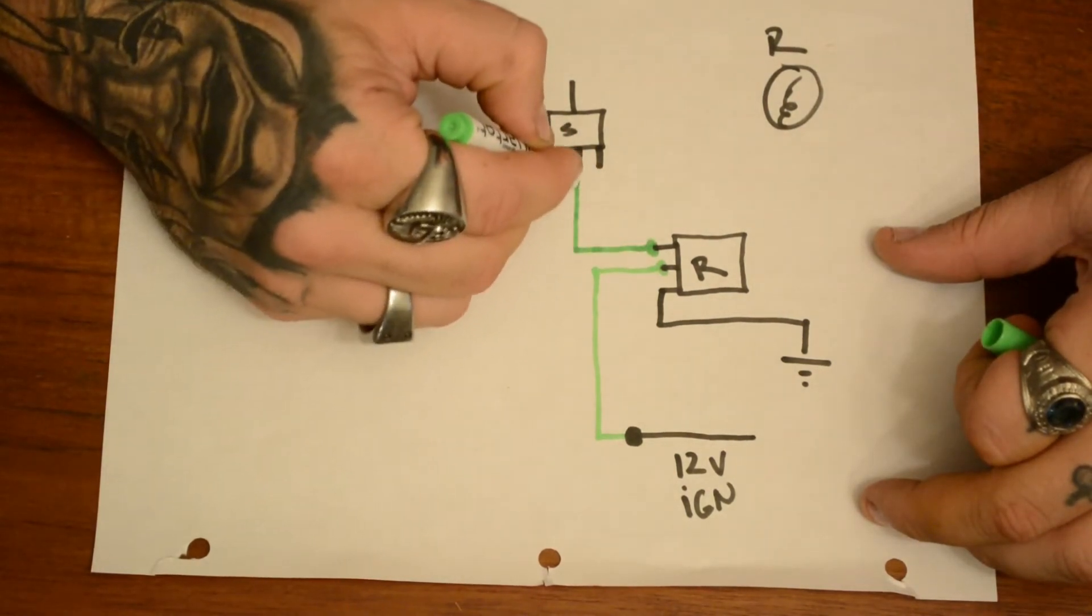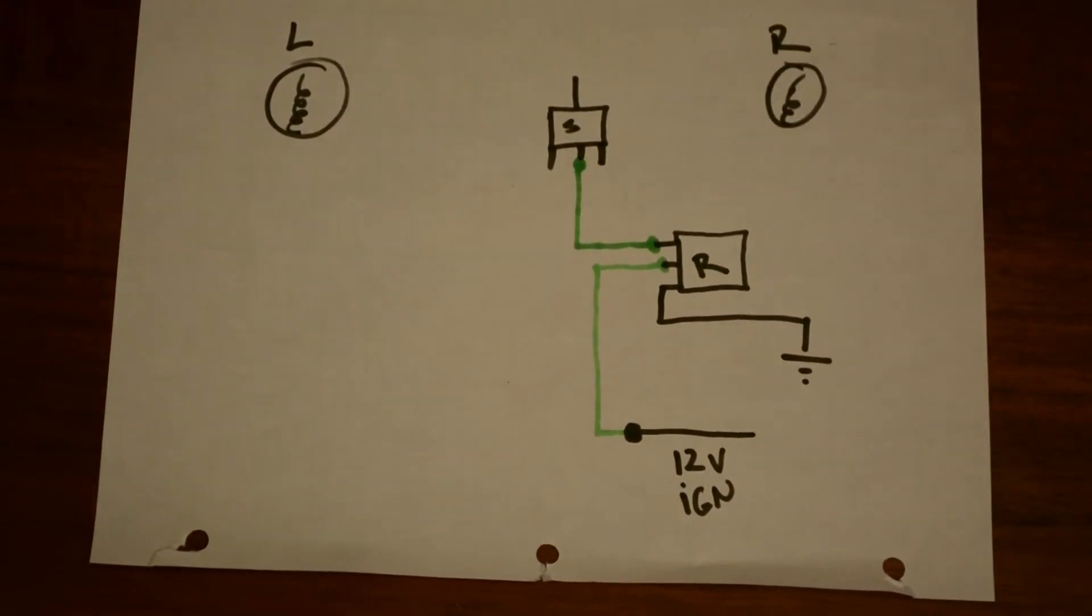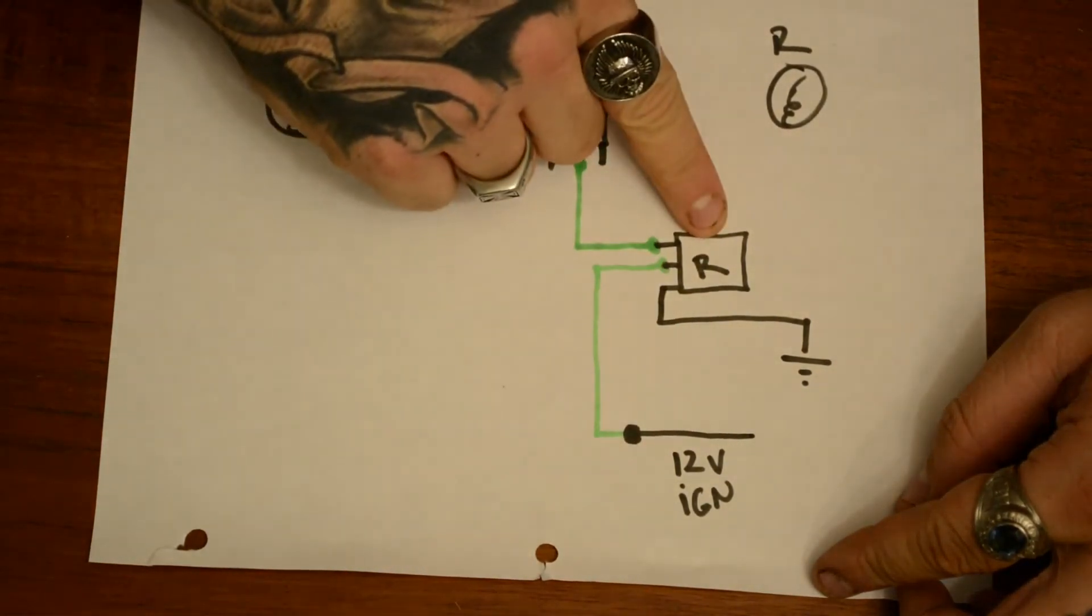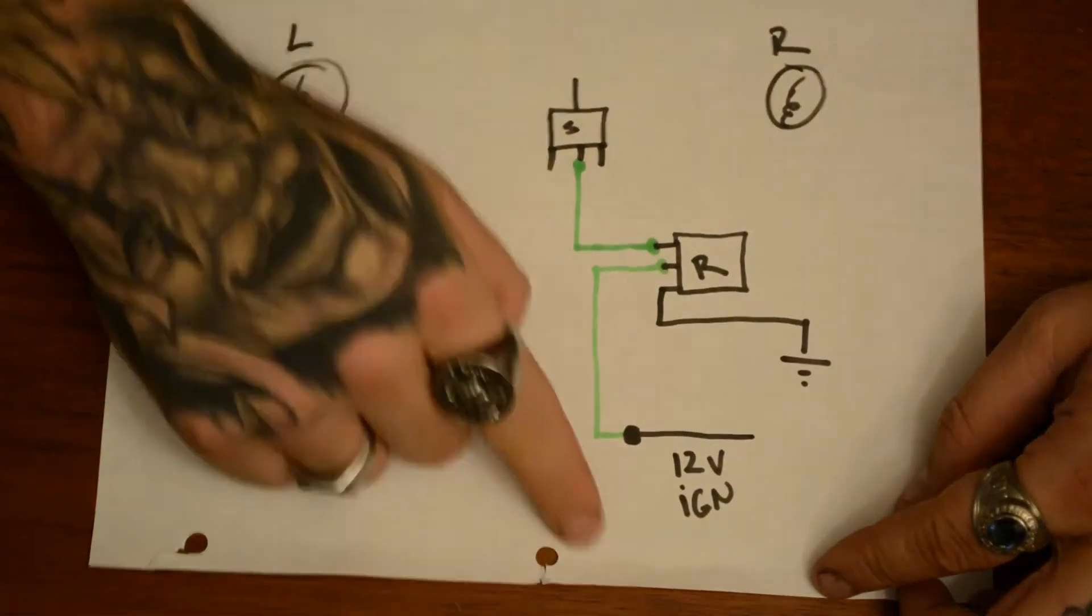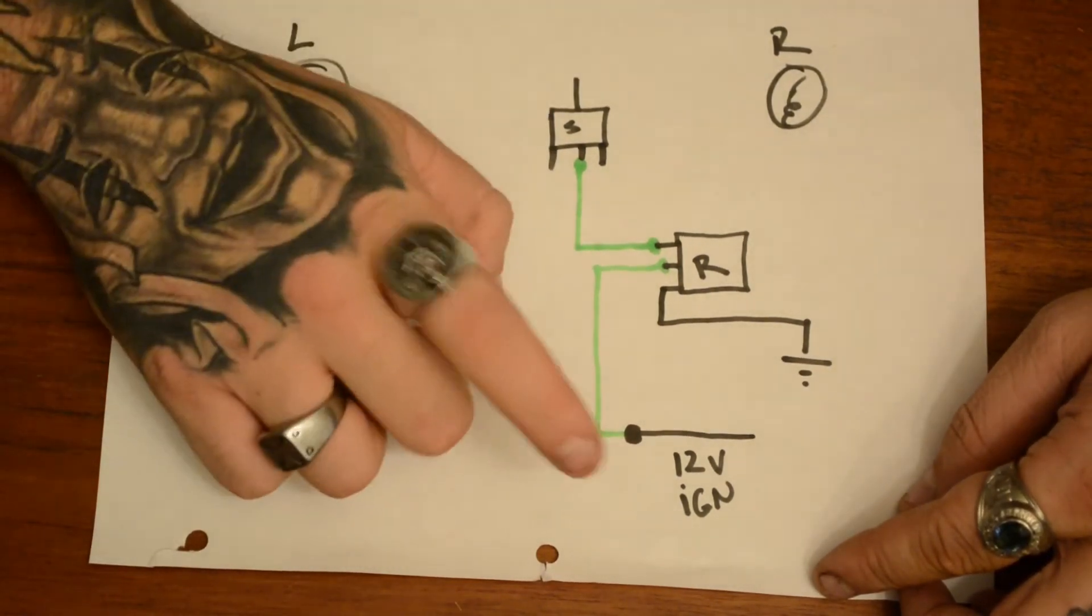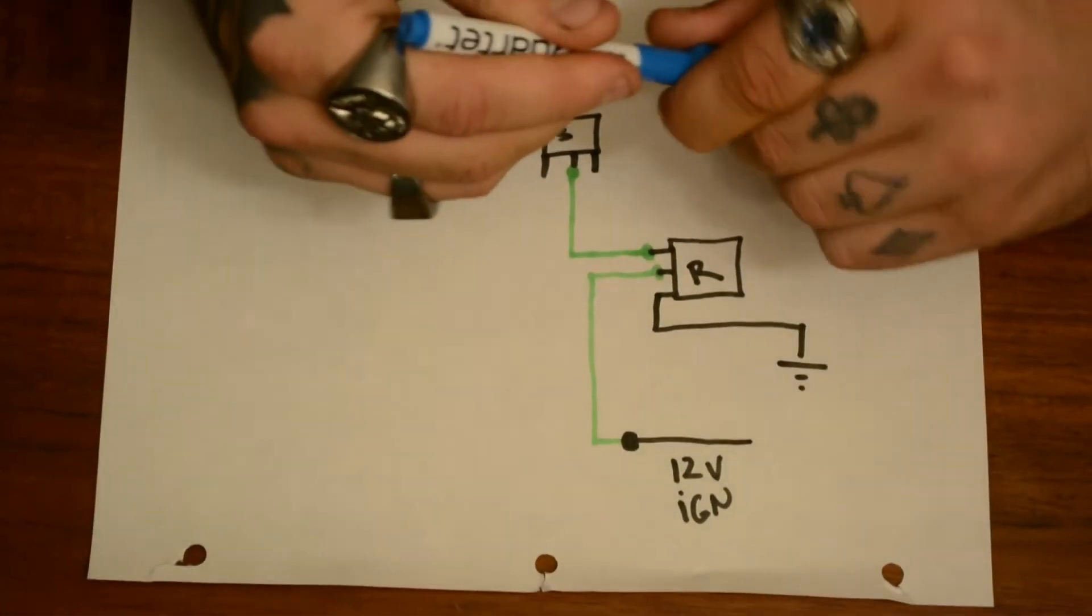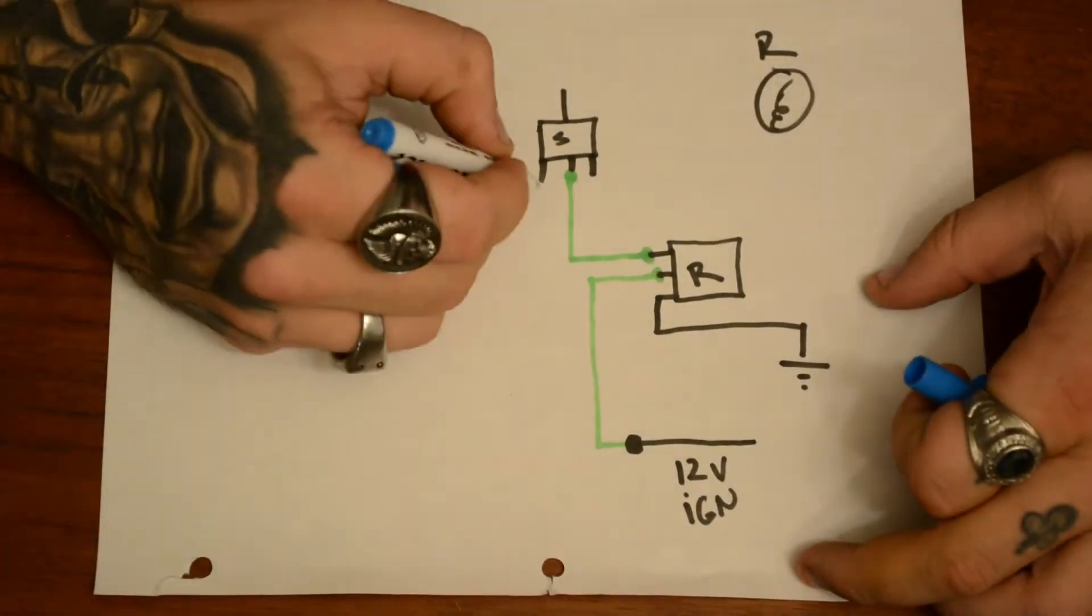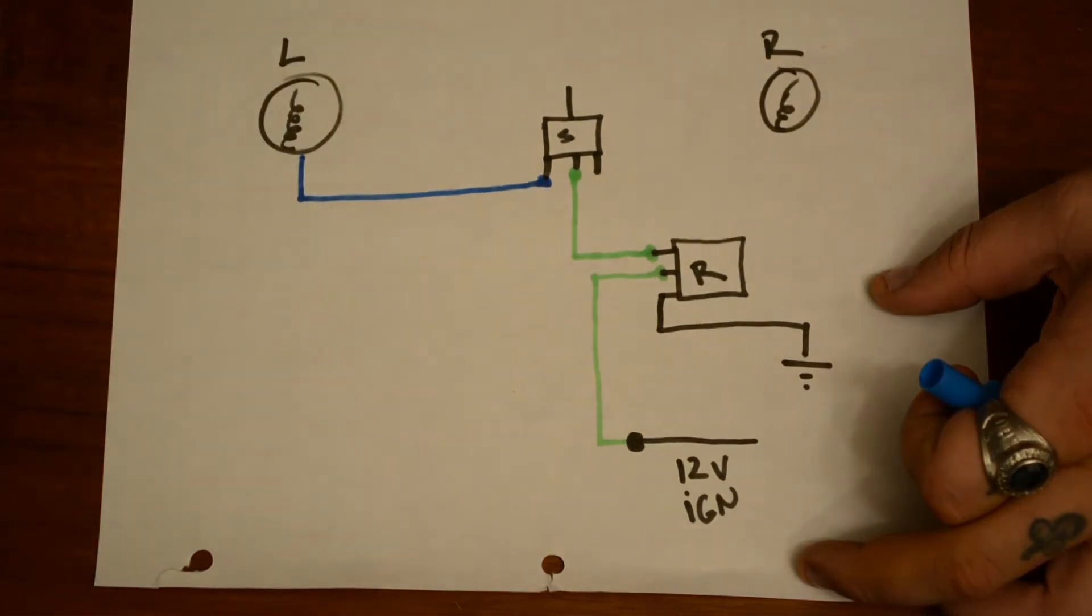So your relay is powered now. So coming out of the relay at that junction, it's going to come up and then to usually the center post of your switch. So you got 12 volt ignition going to your relay that is going to your switch. So now this is a complete circuit, almost really almost. But this is a complete circuit between your ignition and your switch. All you have to do at this point is add your turn signals.